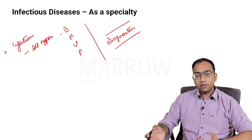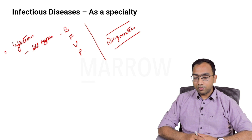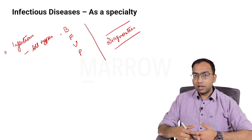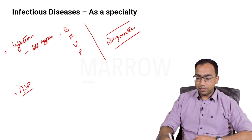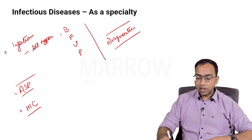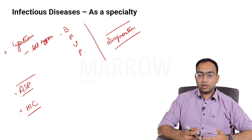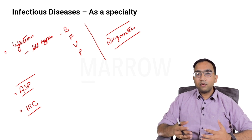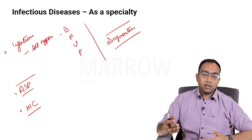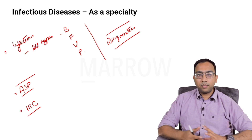Apart from dealing with infections, their diagnosis and management, there's a larger role that an ID physician is supposed to play under the scope of the practice of infectious diseases — that is antimicrobial stewardship programs. The other thing is to be part of hospital infection control committees. Hospital infection control is probably one of the most under-emphasized areas, especially for trainees working in government hospitals where there is no concept of infection control.